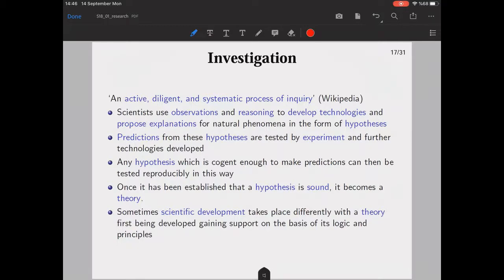Let's take a look at investigation. It is an active, diligent, and systematic process of inquiry. Scientists use observations and reasoning to develop technologies and propose explanations for natural phenomena in the form of hypothesis. Predictions from these hypotheses are tested by experiment, and further technologies are developed. Any hypothesis which is cogent enough to make predictions can be tested reproducibly. Once it has been established that a hypothesis is sound, it becomes a theory. Sometimes scientific development takes place differently, with a theory first being developed, gaining support on the basis of its logic and principles—again, the difference between inductive and deductive reasoning.